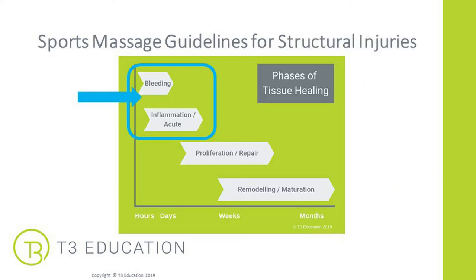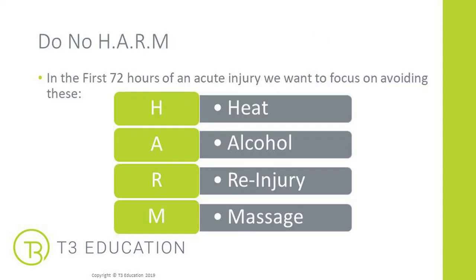Looking at the guidelines for the bleeding and inflammation — the acute phase. In the first 72 hours of an acute injury, focus on the 'do no harm' acronym: avoid heat, alcohol, re-injuring the area, and massage. No massage is to be applied in the first 72 hours of any acute injury.